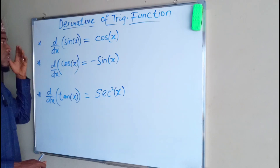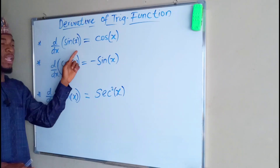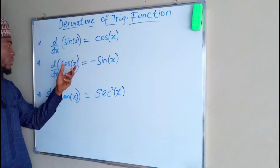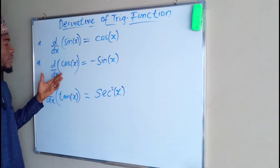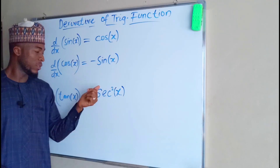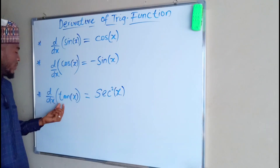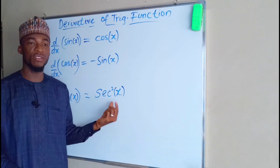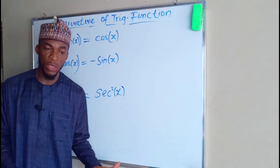By tradition, the derivative of sine x is cos x, the derivative of cos x is minus sine x, and the derivative of tan x is sec squared x.